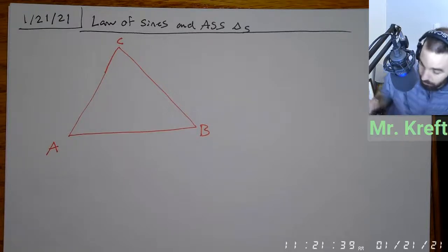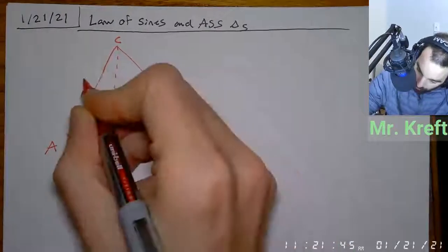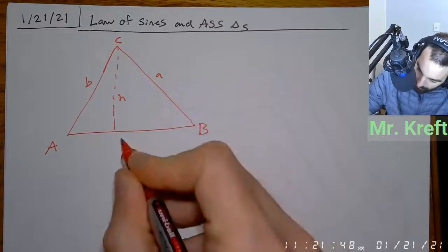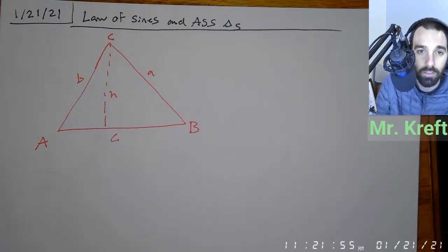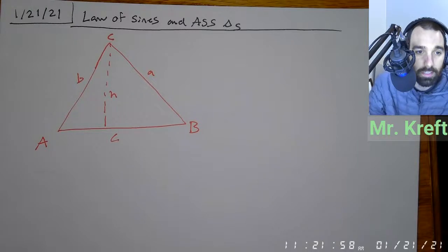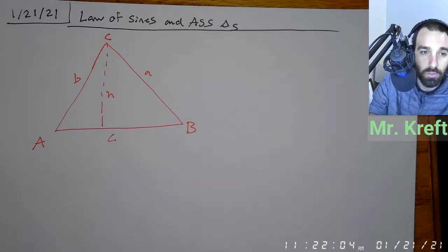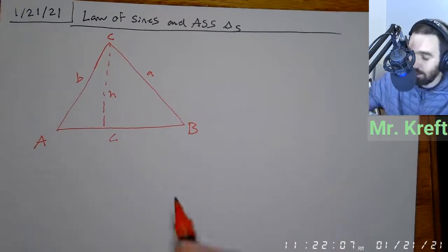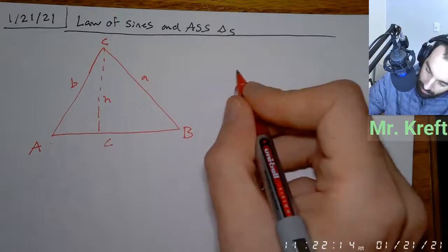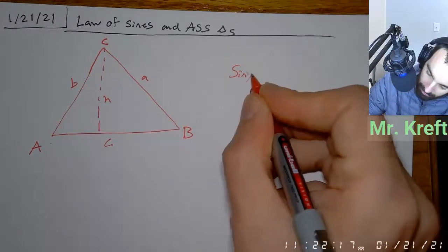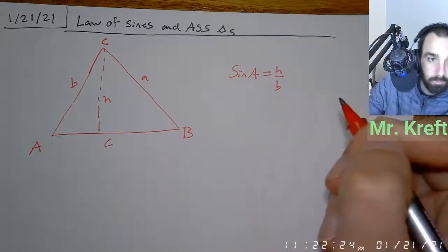I'm making sure I'm doing this the right way. So the reason why we do this is that we have a height here. This would be side B, this would be side A, and side C. So the key idea comes from the height of the triangle. If we look at angle A, sine of angle A would be opposite over hypotenuse, so that would be H over B.